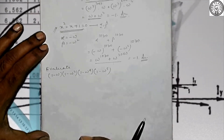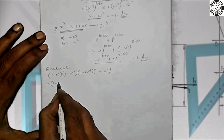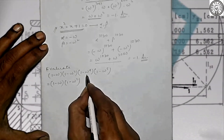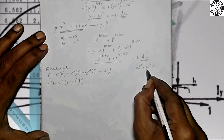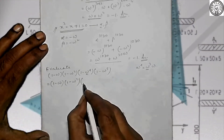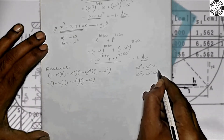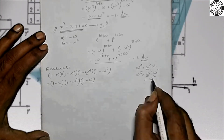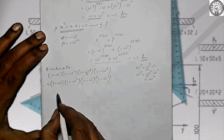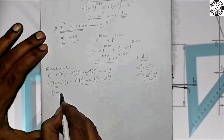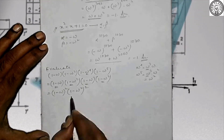We are taking basic sums first, then we will increase the level. Omega to the power 4 can be written as omega cube into omega. Since omega cube = 1, this gives (1 - omega). Again, omega⁵ = omega cube × omega² = omega², so this gives (1 - omega²). Combining: (1 - omega)² × (1 - omega²)².